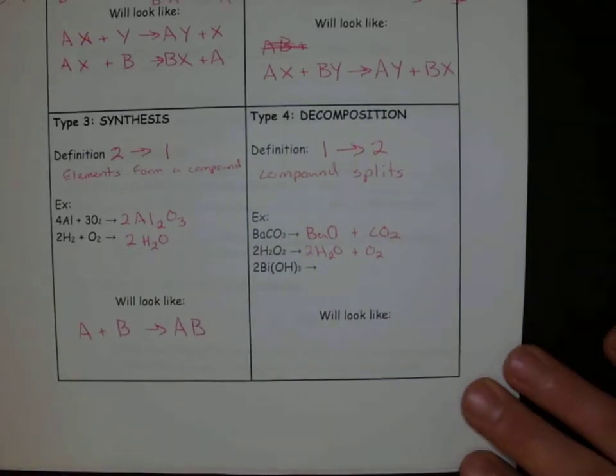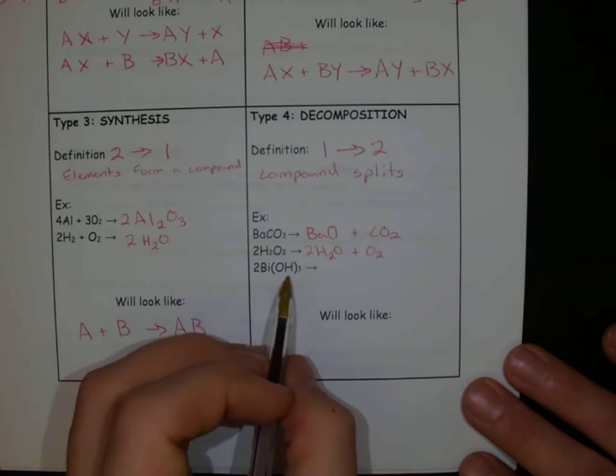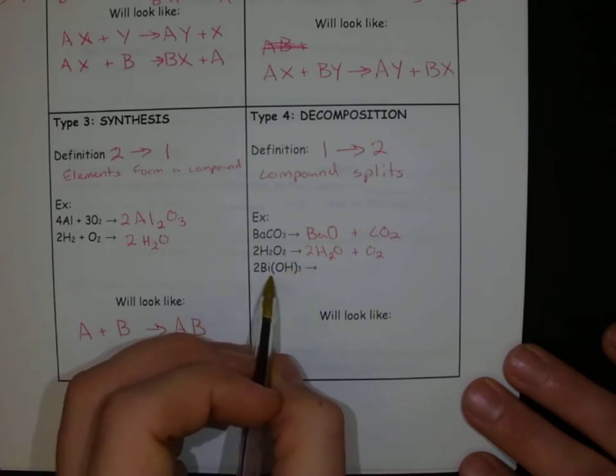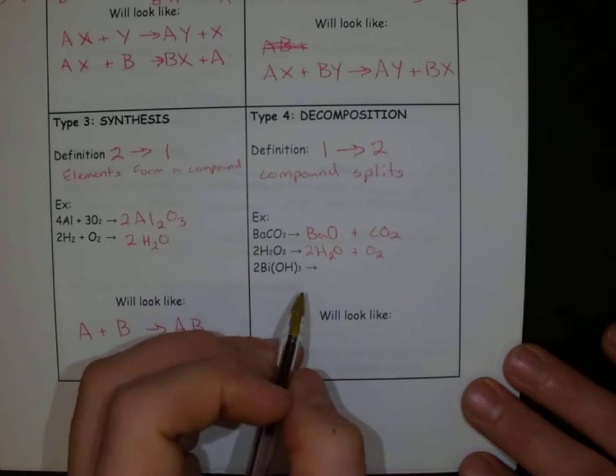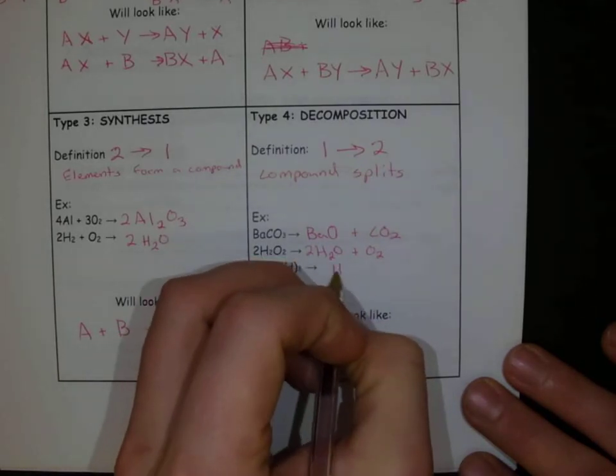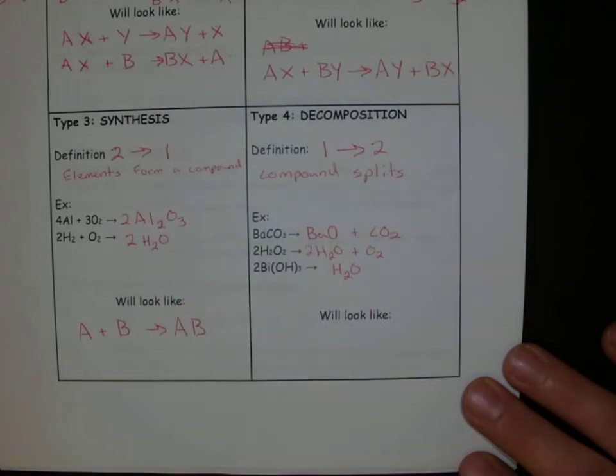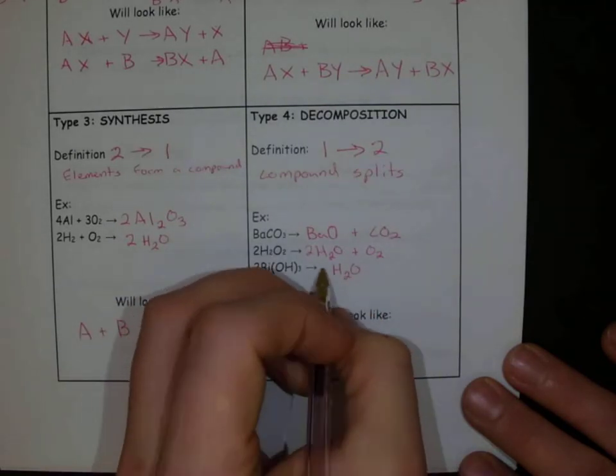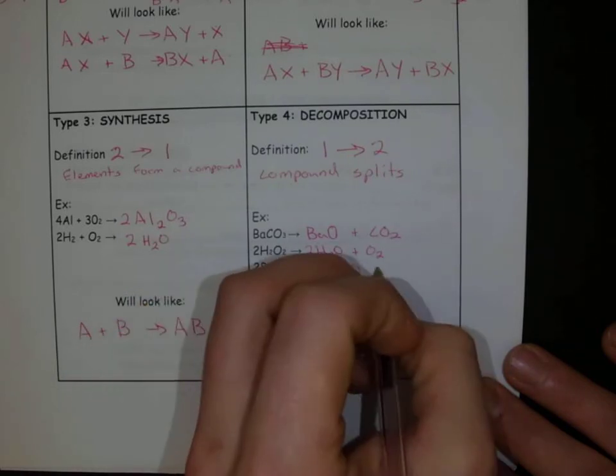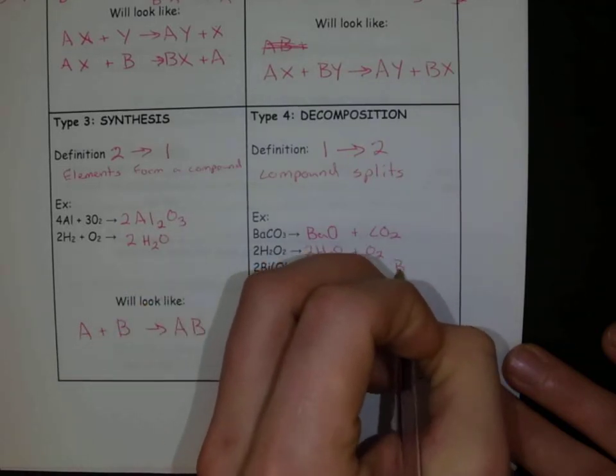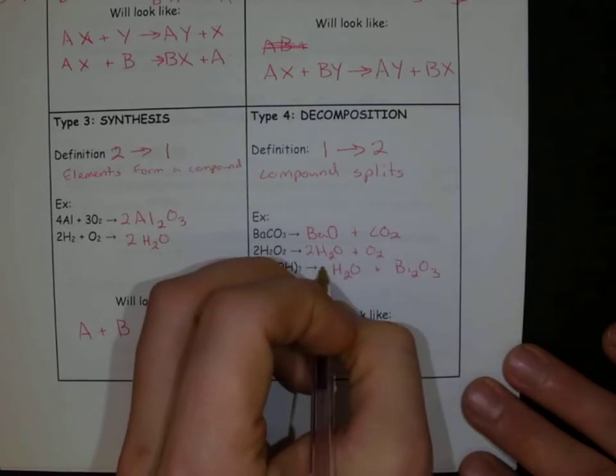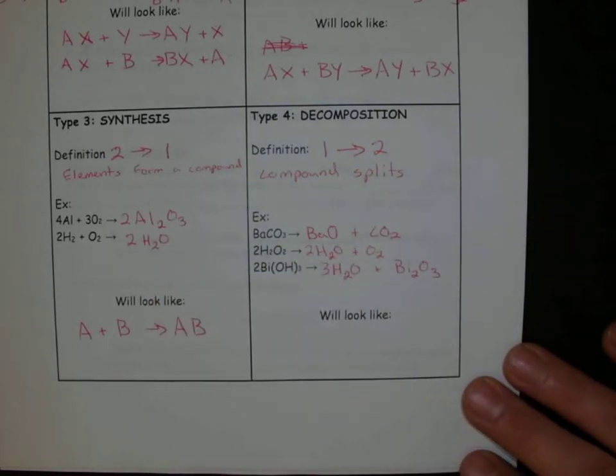So now, this last one, bismuth hydroxide. Hydroxides, again, is another ion, this is a polyatomic, that oftentimes breaks up into something. This often will break up into H2O. So I'm going to form H2O here, and I'm actually going to be left with, I'm going to remove all of my hydrogens, and I'm going to be left with bismuth oxide, so Bi2O3. So then for me to have this balanced, we're going to have a three there.